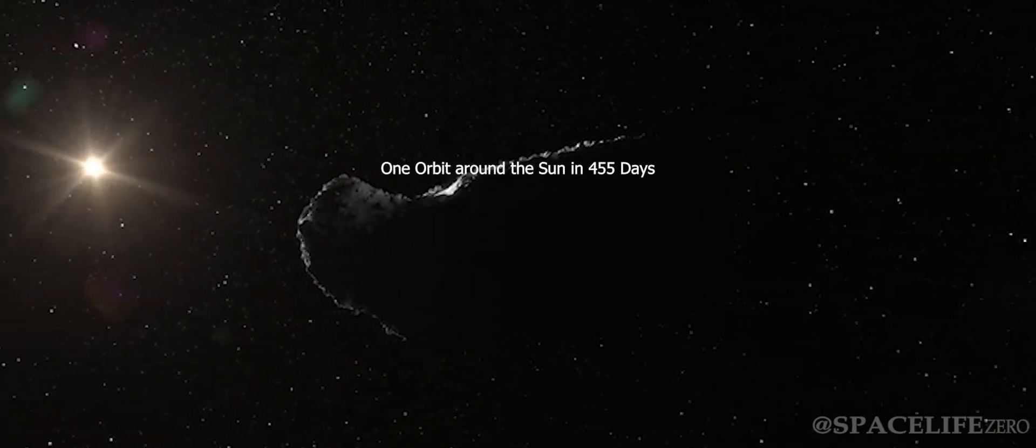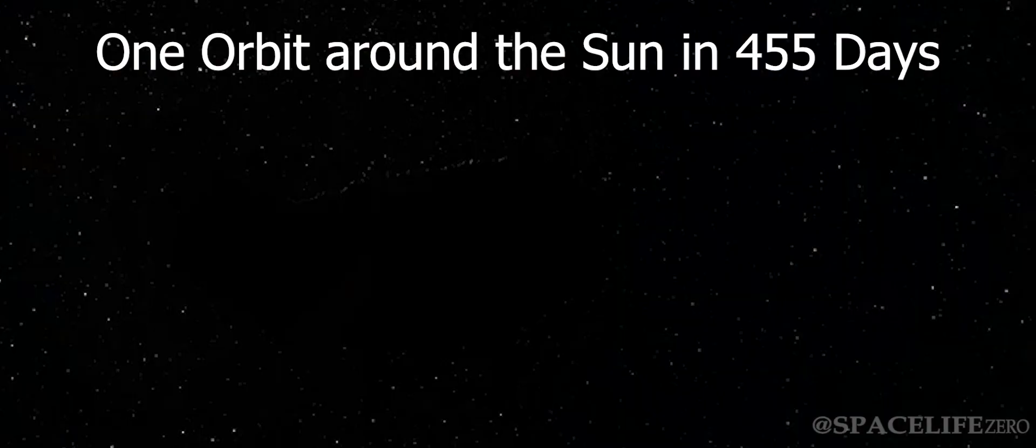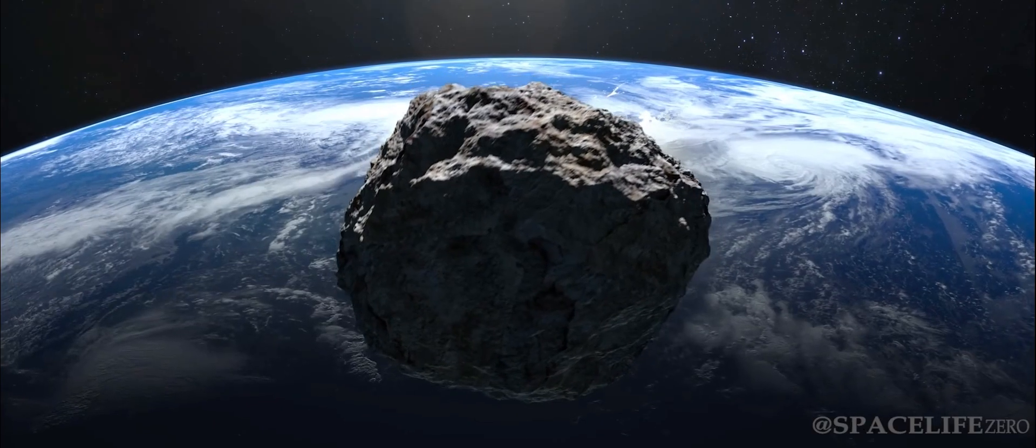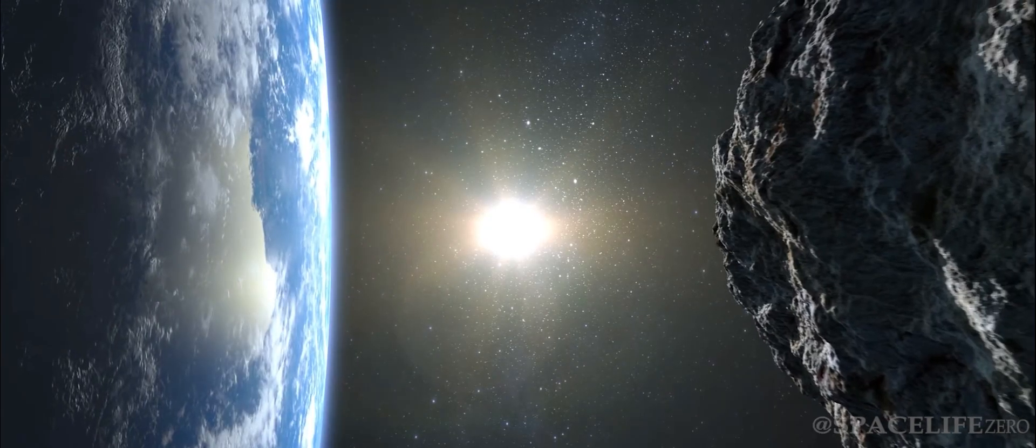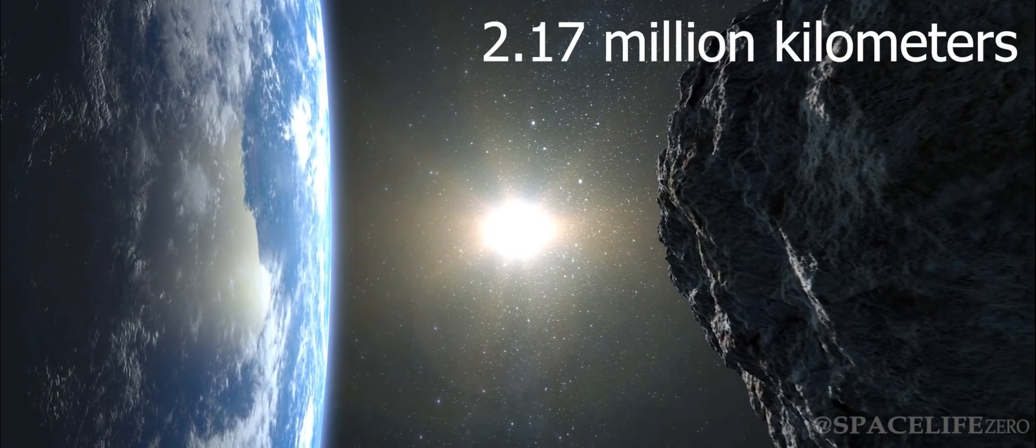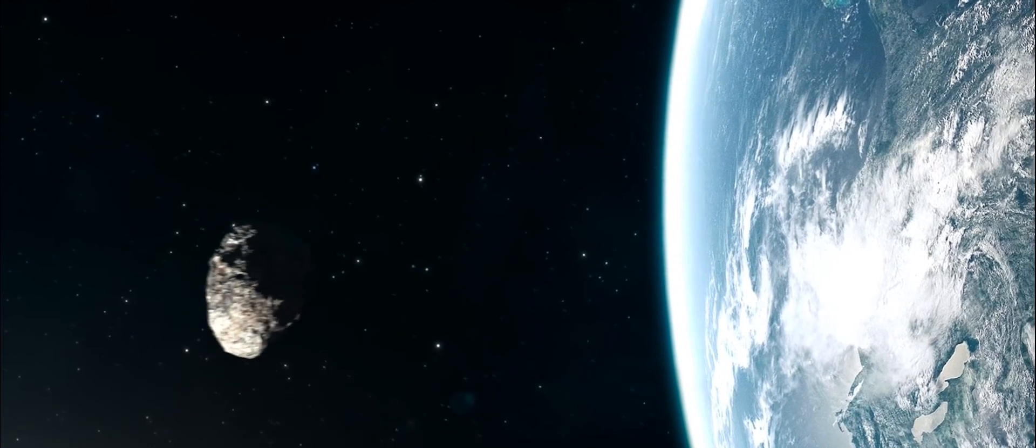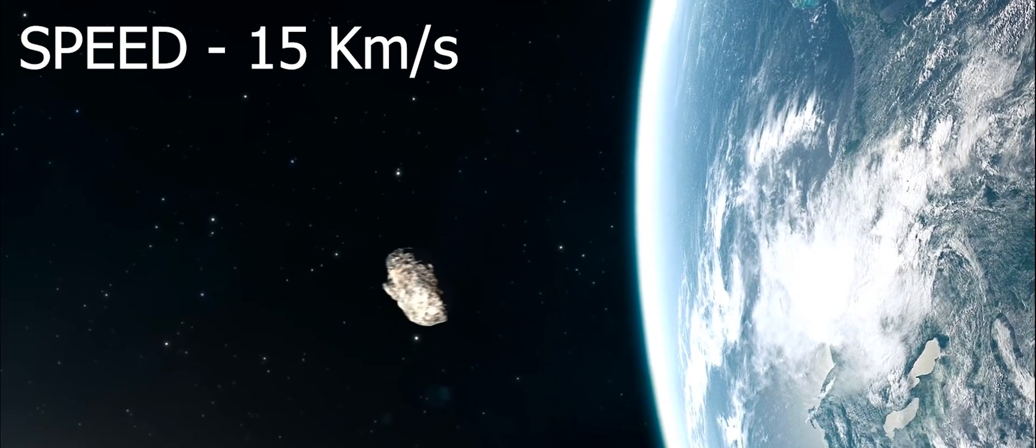It makes one orbit around the Sun in 455 days. On December 26 at 317 GMT, it will fly past Earth at a close distance of 2.17 million kilometers, at an incredible speed of 15 kilometers per second.